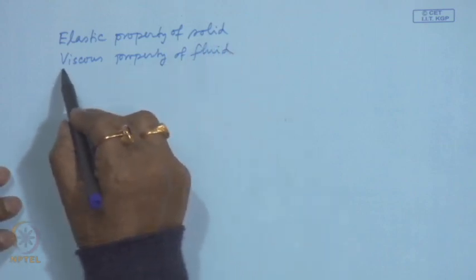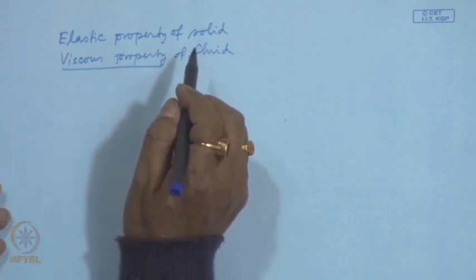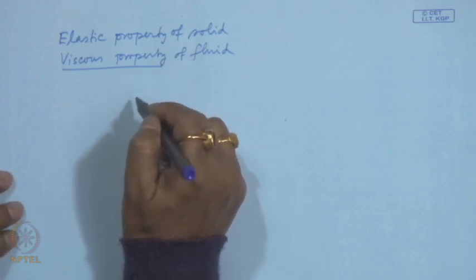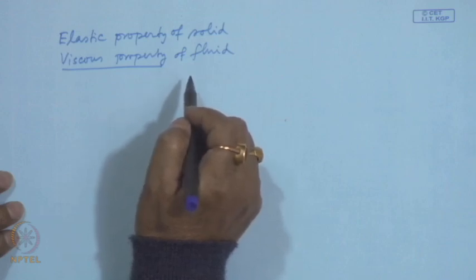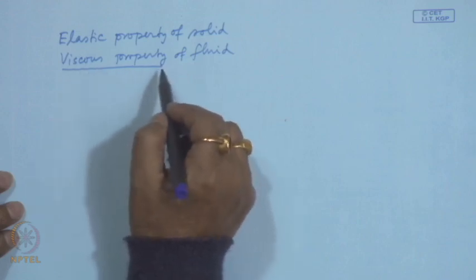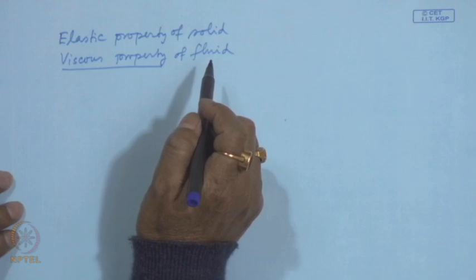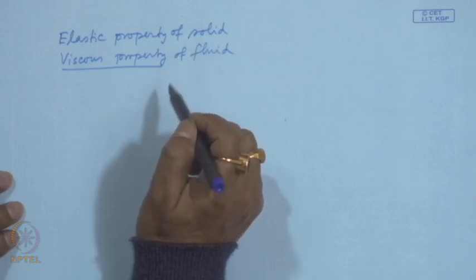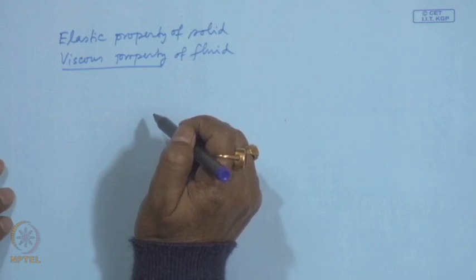Due to the presence of viscous property of fluid we find good processability in polymer materials. When we compare polymer materials with ceramics and metals, good processability is cited in favor of polymers. Because of the presence of both a viscous component and an elastic component in the polymer molecule, we can get very good strength properties as well as good processability compared to metals and ceramics.